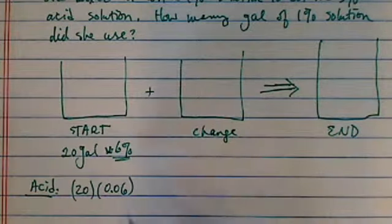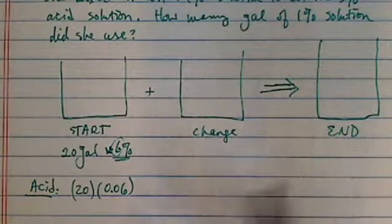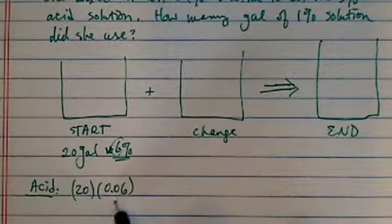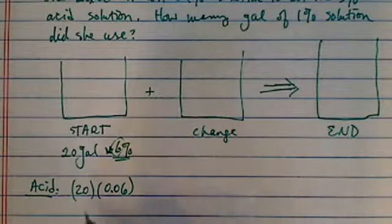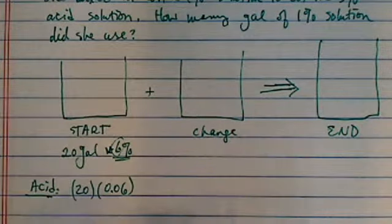So it's 20 gallons times 0.06. Now notice I put the 6% converted into a decimal. 6%, the 6, you can't really use 6 because it's not a number per se. It's a 6 over 100. You've got to calculate it into a decimal first. So this is the amount of acid that we have.